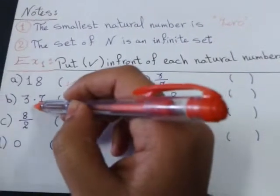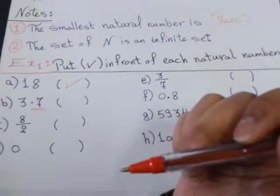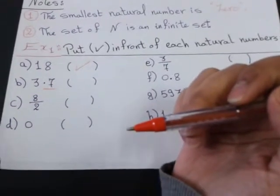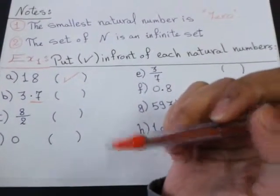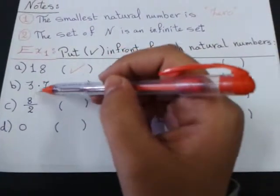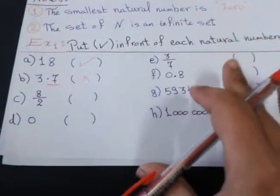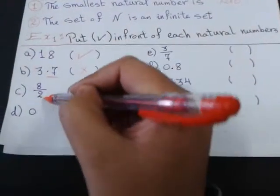3.7? No. When I'm counting the numbers, all the numbers I said are whole numbers, not decimal numbers or fraction numbers. So, 3.7 is a decimal number, so it's not a natural number. 8 over 2.